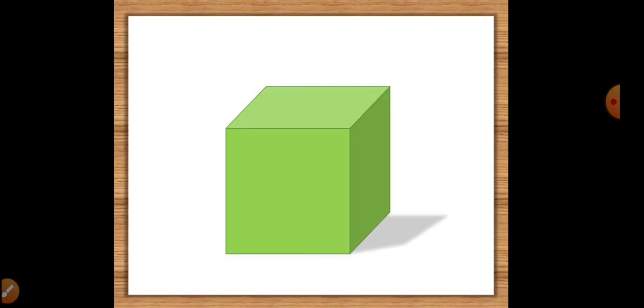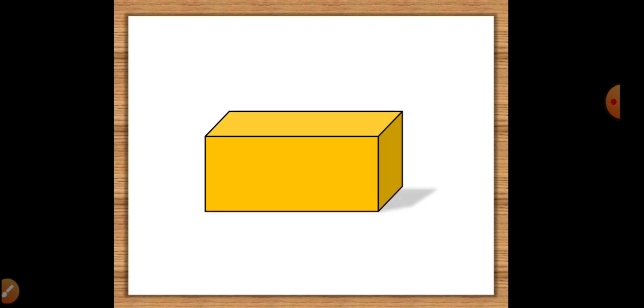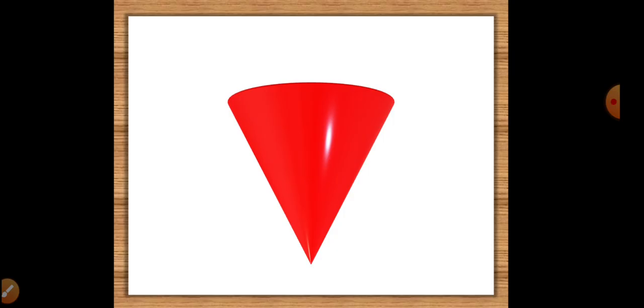What is it called? Sphere. Are you seeing the light spots? Very good! This shape is called a cube. Are you seeing a shadow or a light spot? Great! This shape is called a cuboid. Remember to check for the shadows or light spots. This shape is called a cone. Any shadows or light spots? Great!